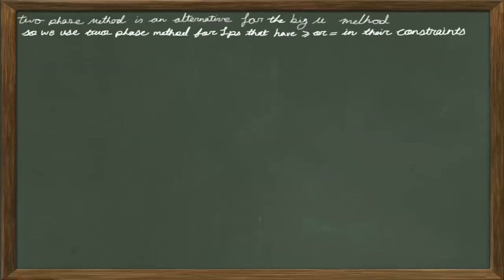The two-phase method is an alternative for the Big M method. We use the two-phase method for LPs that have greater-than-or-equal or equal signs in their constraints.